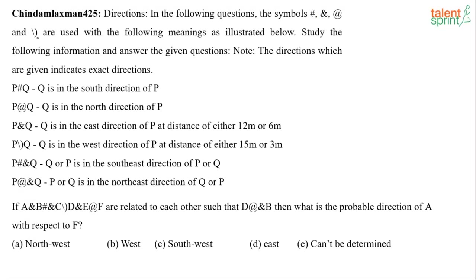In the following questions, the symbols hash, ampersand, at-rate, and slash-with-brackets are used with specific meanings as illustrated. Note that the directions given indicate exact directions with no ambiguity. P hash Q means Q is in the south direction of P. P at-rate Q means Q is in the north direction of P. You have to pay attention: it is Q that is in the south of P, not P in the south of Q — the second person is in the stated direction of the first.